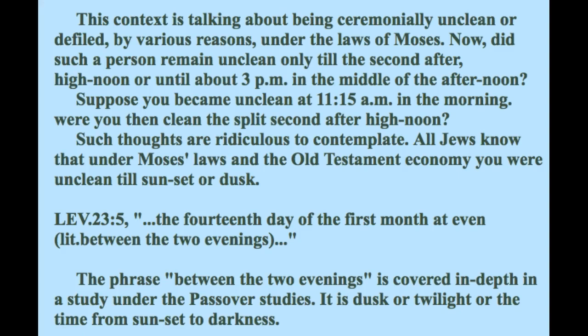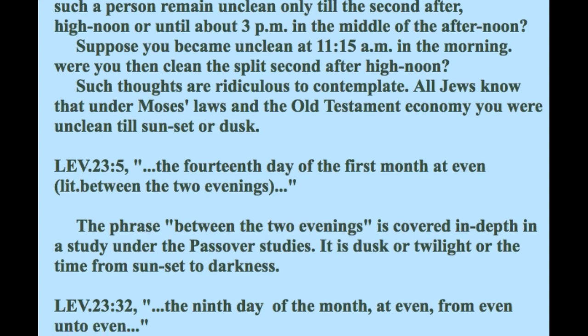So what that means is if somebody had a running issue, or leprosy, and they were trying to get clean — they'd have to wait until the evening to be clean. Some laws said they would have to wait seven days, and on the eighth day they could be clean. The reason it says 'unclean until evening' is because right when evening came, that was the start of the new day. They were clean once the evening came in, right after the sun went down. You also see this in Leviticus chapter 23, talking about feast days — for Pesach or Passover, it says 'the 14th day of the first month at even,' and also the phraseology 'between the two evenings.'